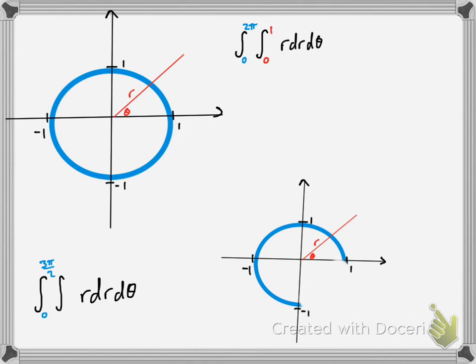What would r be? r would still be 1 and 0, because we're starting at the center. Good job, that was an easy example.